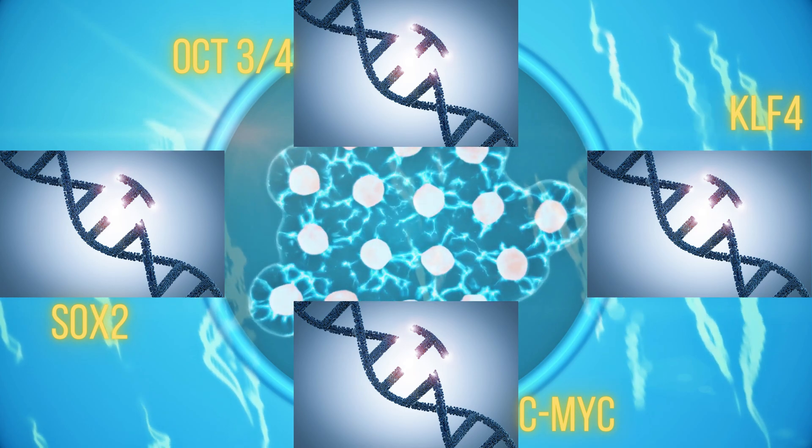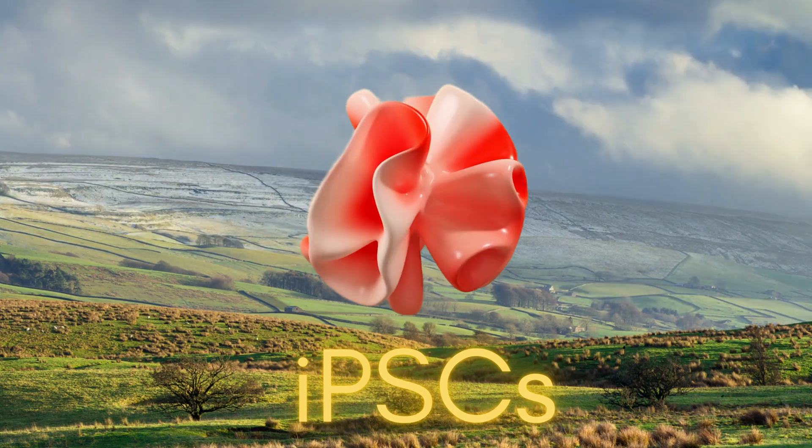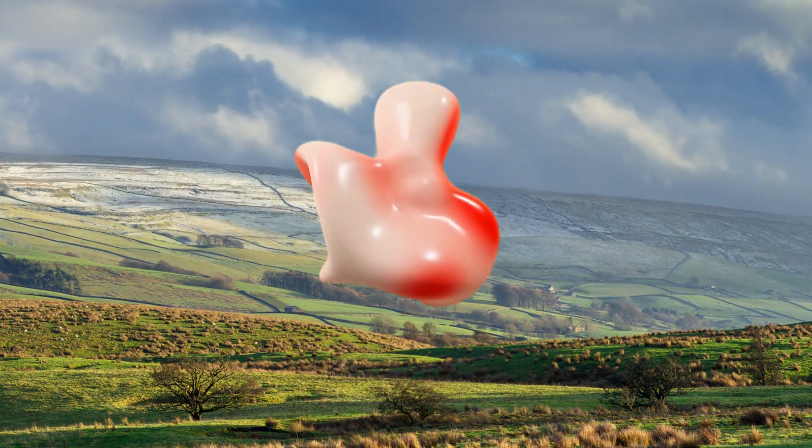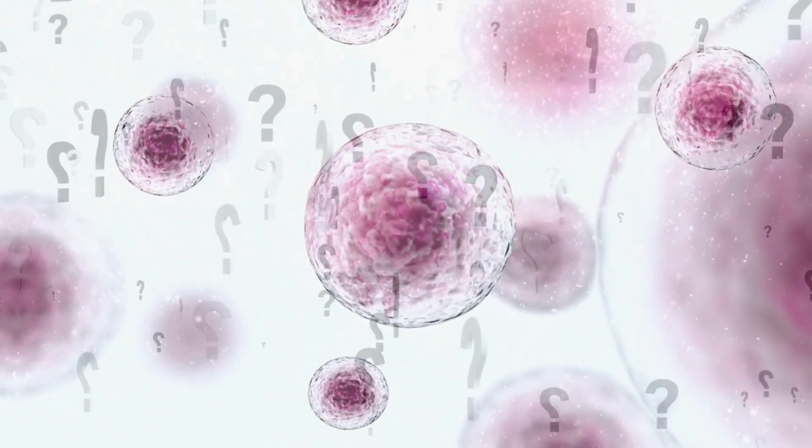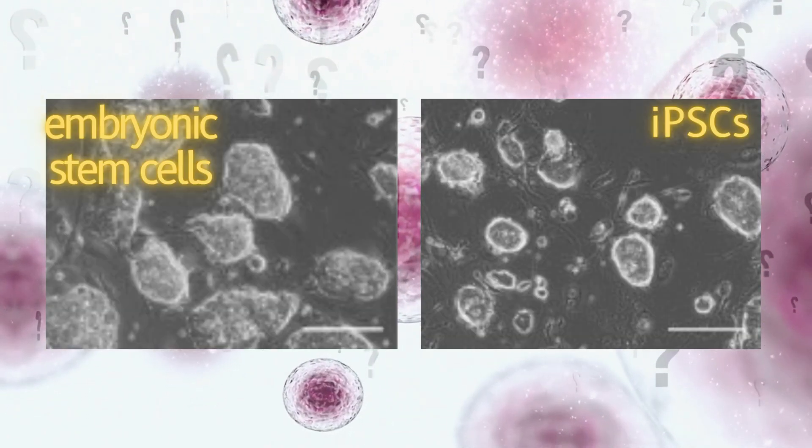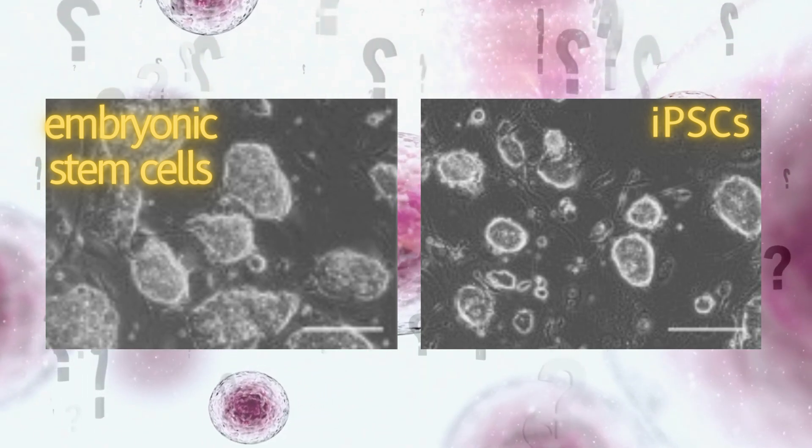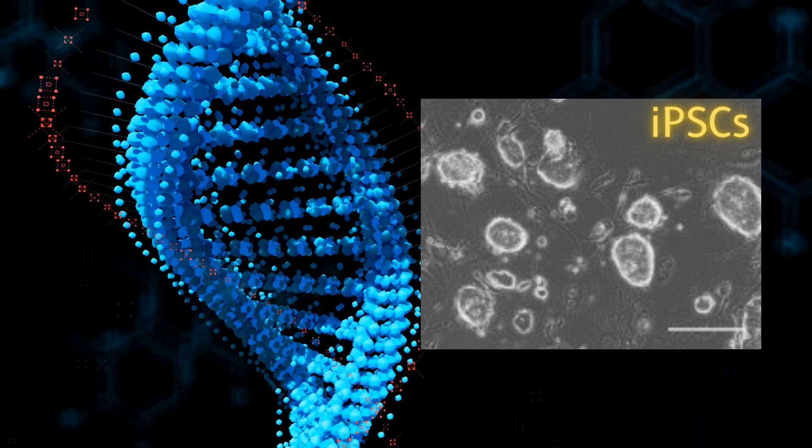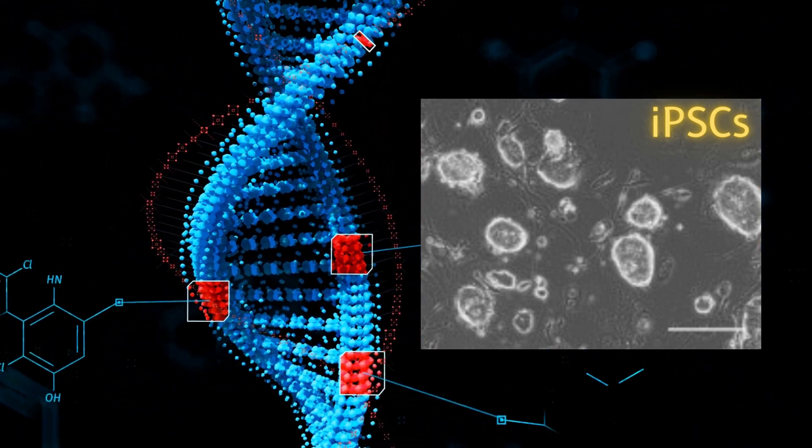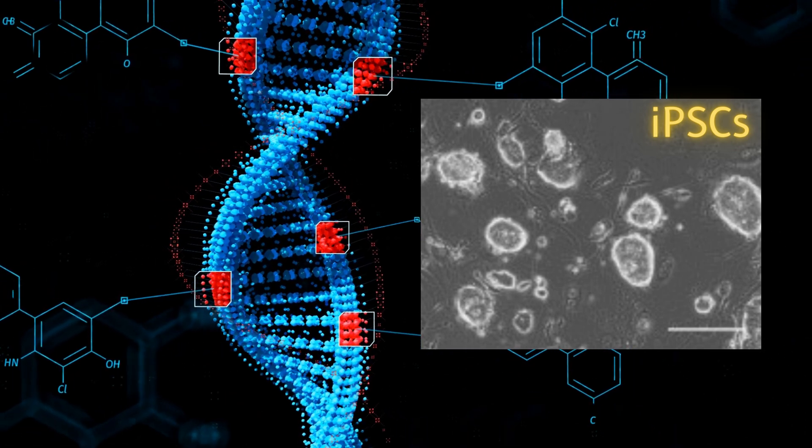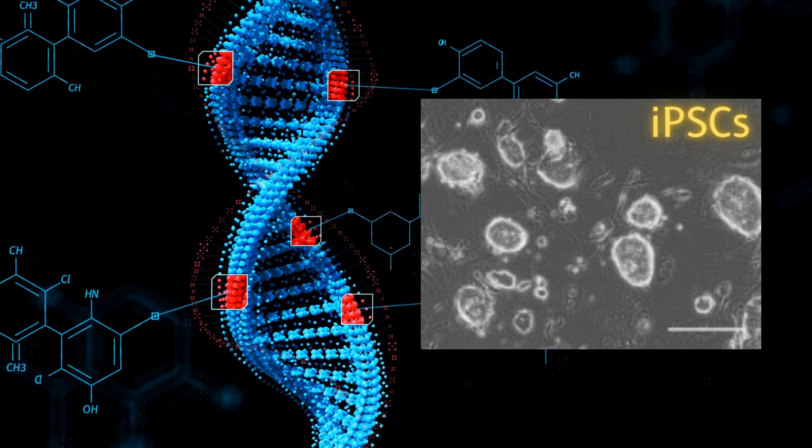The researchers named these cells iPSCs for induced pluripotent stem cells. But the researchers, of course, wanted to be sure that these cells really had qualities of stem cells. They did comparisons in both their iPSCs and embryonic stem cells to look at what genes were being transcribed. They observed that they had more activated genes in common with stem cells than with the fibroblast cells they were made from. There were a few genes that were more active in embryonic stem cells than iPSCs, which indicated that there were a few differences.